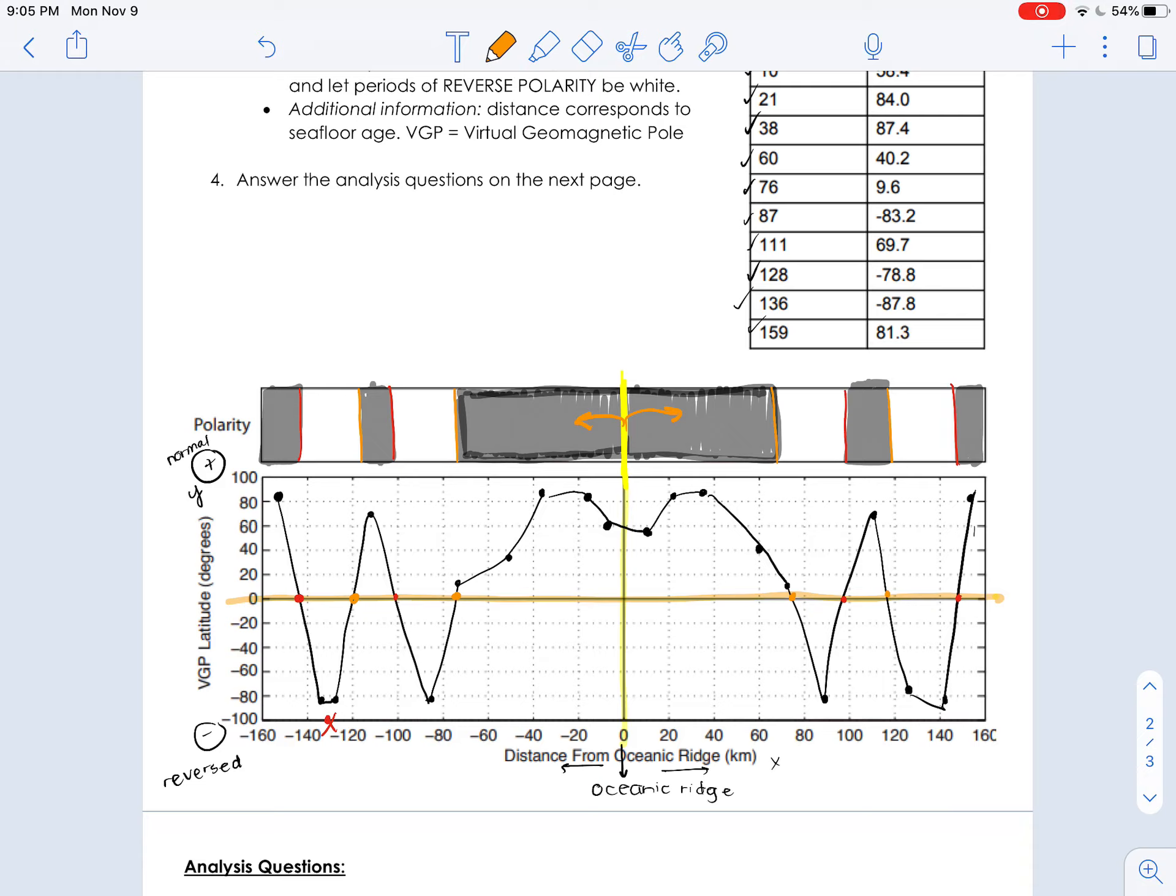So that is why your rocks 20 kilometers on the left are going to match the rocks 20 kilometers on the right all the way out. They basically become mirror images of themselves.